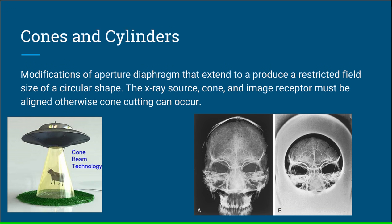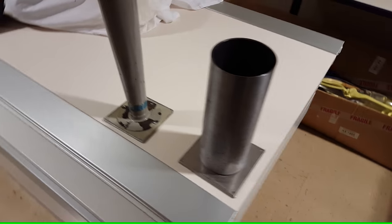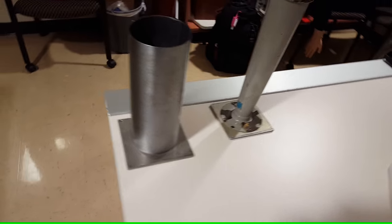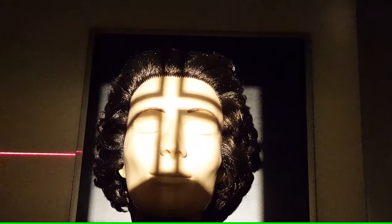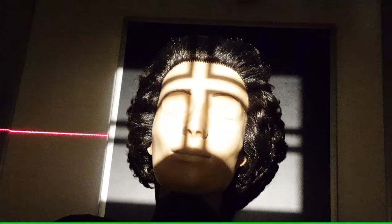Cones and cylinders are modifications of the aperture diaphragm that extend to produce a restricted field size of a circular shape. The x-ray source, cone, and image receptor must be aligned, otherwise cone cutting can occur. Today, cones and cylinders are reserved primarily for examination of selected areas such as sinuses. Radiographic cones and cylinders produce restricted useful x-ray beams of circular shape. The use of cones funnels the beam to the anatomy of interest, therefore reducing scatter radiation and improving image contrast.